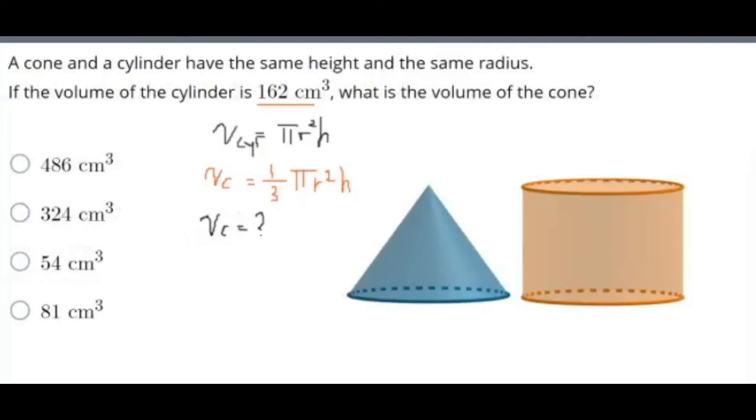For this question, we have a cone and a cylinder have the same height and the same radius. And if the volume of the cylinder is 162 centimeters cubed, what is the volume of the cone? Firstly, I'm going to list out both the formulas. The formula for the volume of my cylinder is equal to π r squared h, and the volume of my cone is basically 1/3 π r squared h. They say that both the cone and the cylinder are the same height, same radius. So we don't have to worry about radius or h, and π is a constant. And the formulas are all practically the same for these two shapes, except for one thing, and that is this 1/3 over here.